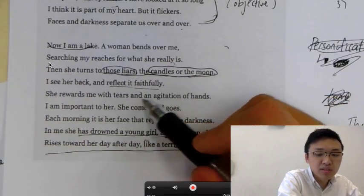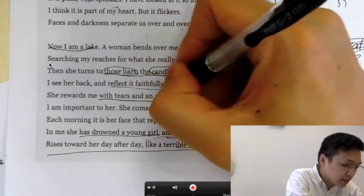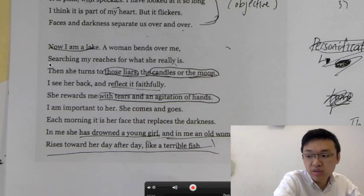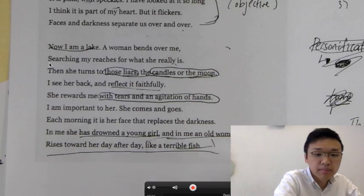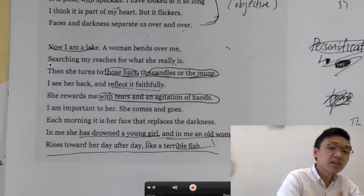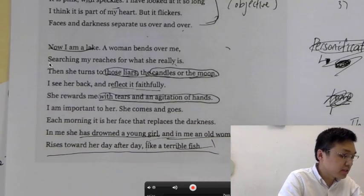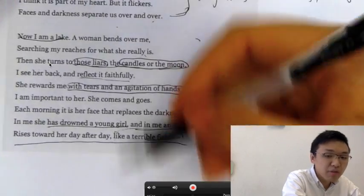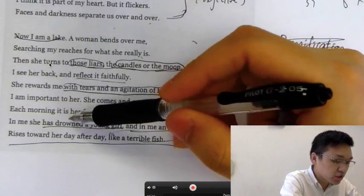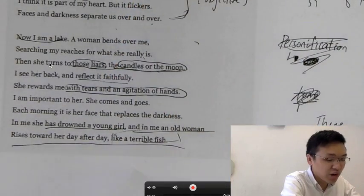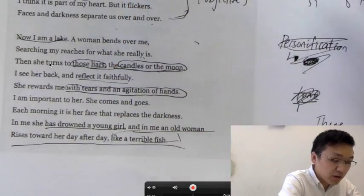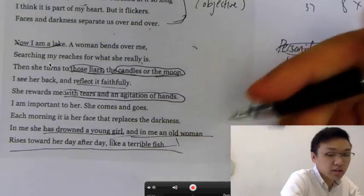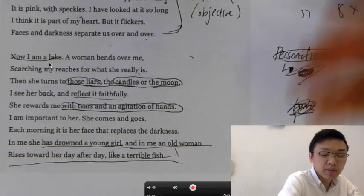So that's why I think this liars here refers to objects or people that are going to give her a false sense of beauty. She rewards me with tears and agitation of hands. This indicates how she is very emotional about her aging process. She's very desperate. So it is, I'm important to her, she comes and goes. She looks at the mirror every day. This shows she's very desperate. Each morning, it is her face that replaces the darkness. So every morning, she's in front of the mirror and she drowned a young girl. So the young girl is being killed, drowned in the river. So it's forever gone. And in me, an old woman rises toward her day after day like a terrible fish. So this again is a metaphor showing how she is aging.